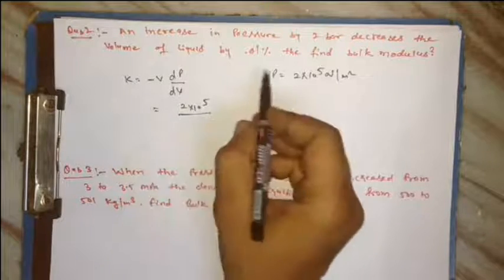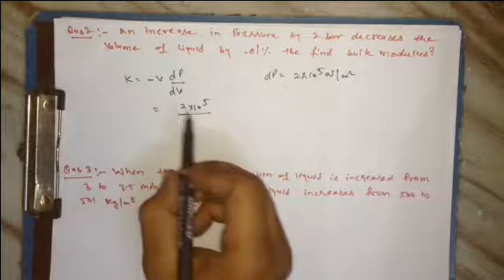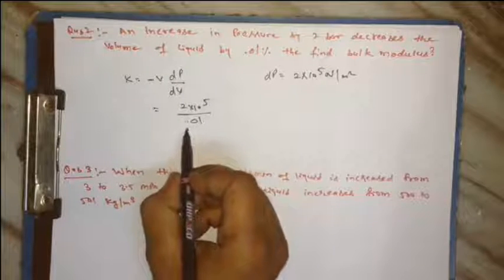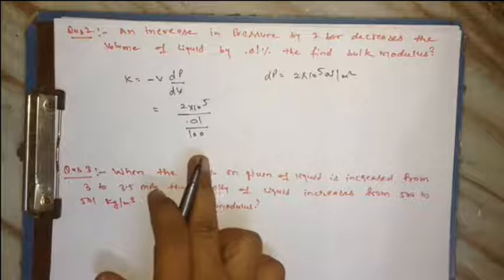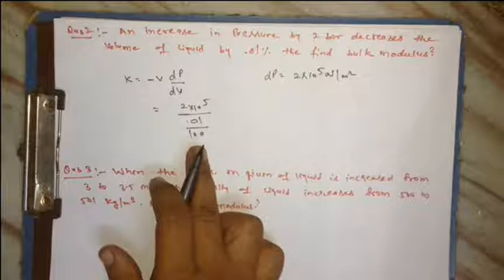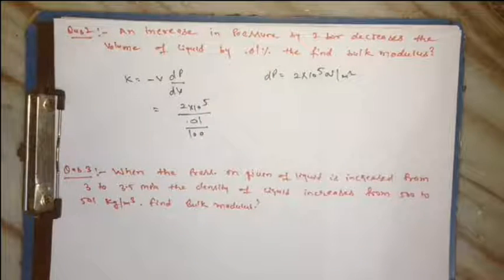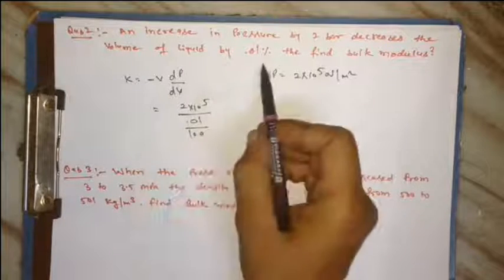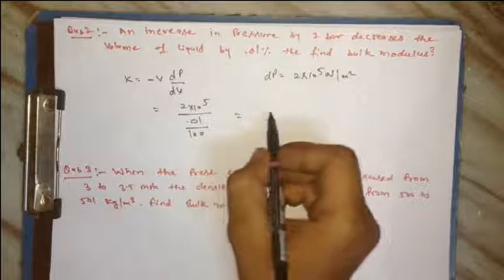dV kitna aayega 0.01%? Original V nahi pata, let maan leta hun ki original V 100 hai to decrease kitna hua 0.01. If I assume original is 100, then 0.01% is 0.01. As you want, take 0.01% of it. I took V as 100 and decrease was 0.01%, so answer kya aa jaye ga yahan se: